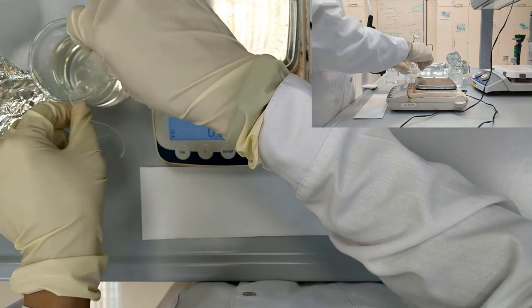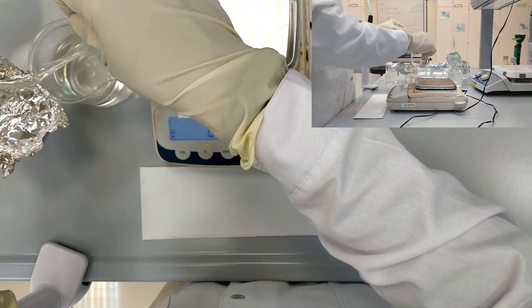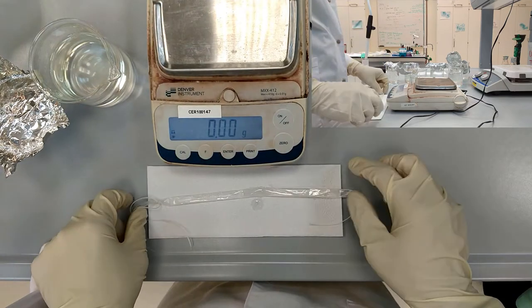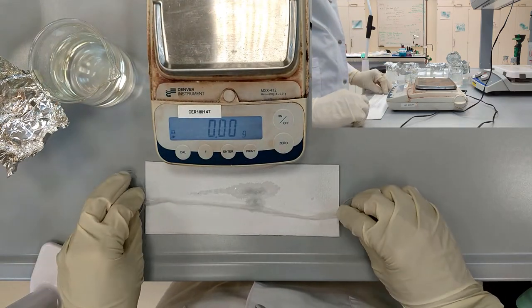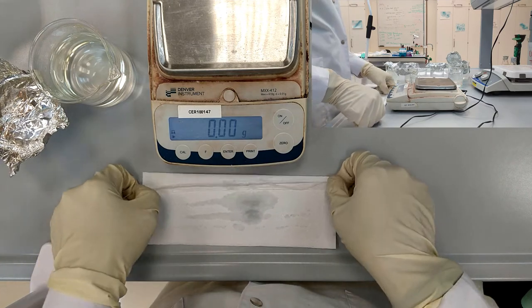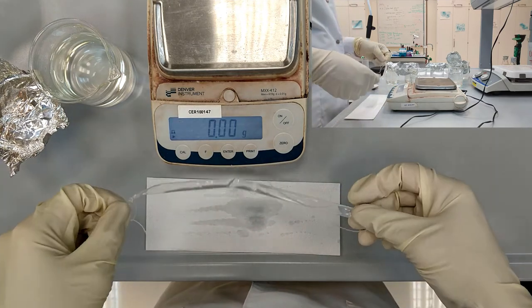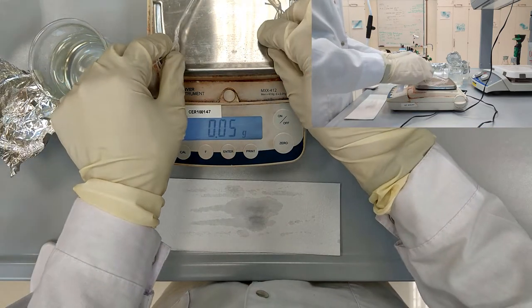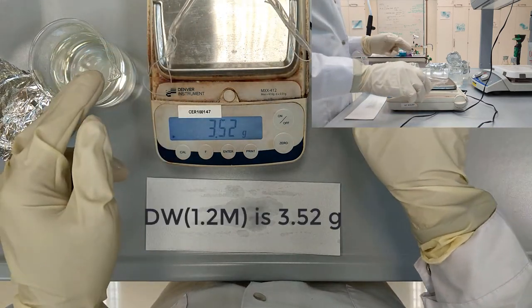We need to determine the mass of the dialysis tube that was placed in the 1.2 molar glucose. We dry it and place it on the scales, so the mass is 3.52 grams.